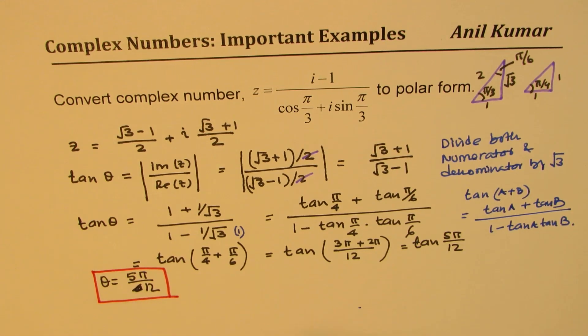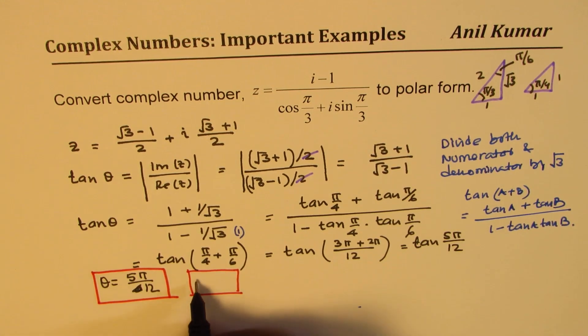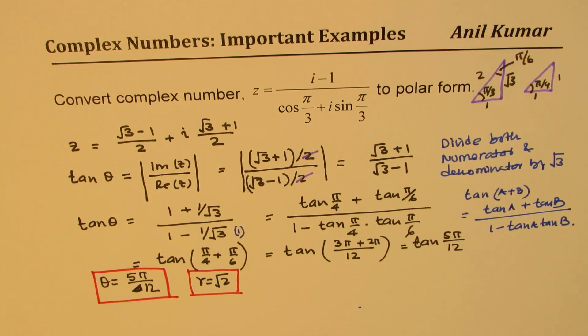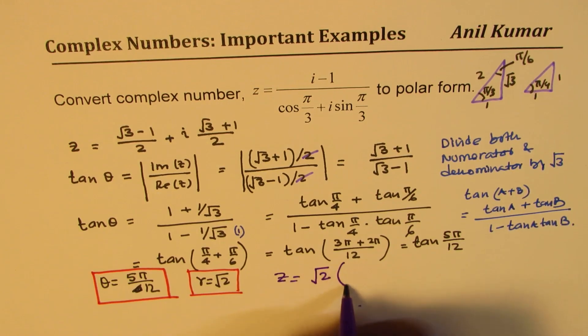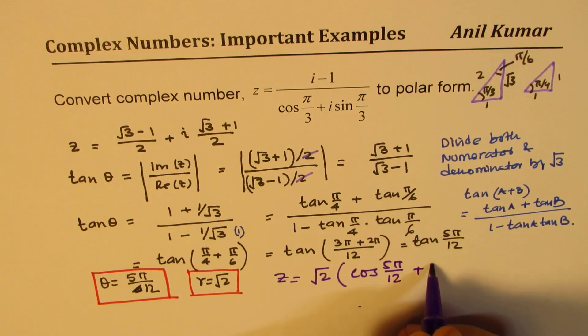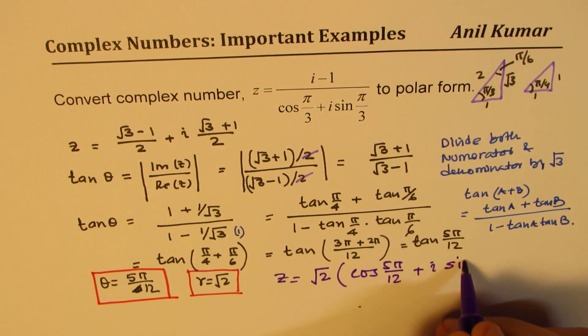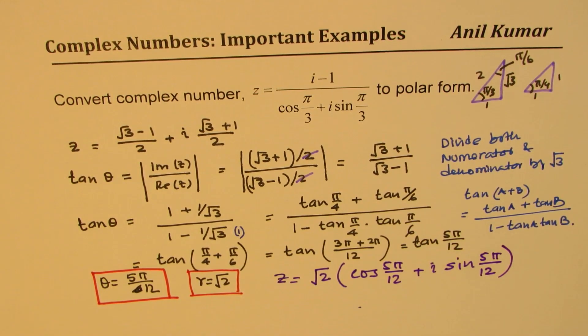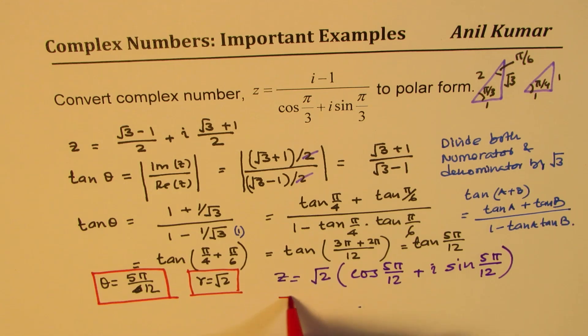Earlier we found that r was √2. And therefore now we can write that the complex number z can be written as √2(cos 5π/12 + i sin 5π/12). So that becomes the polar form.